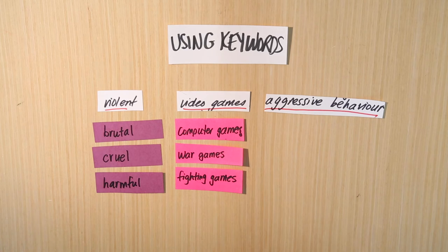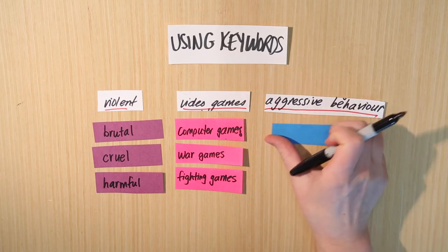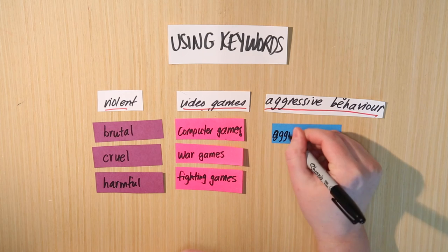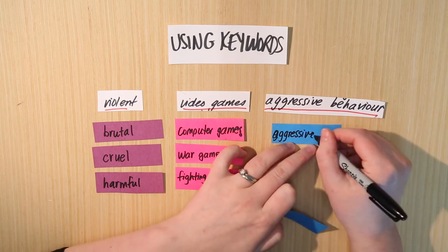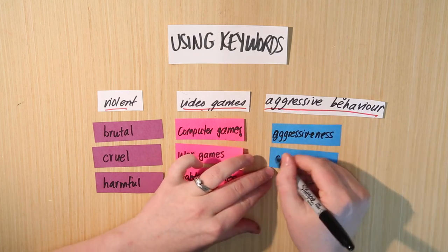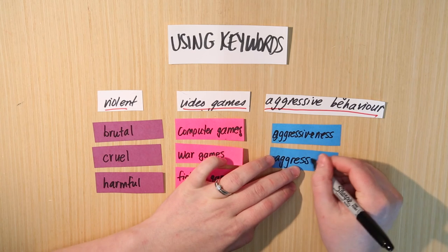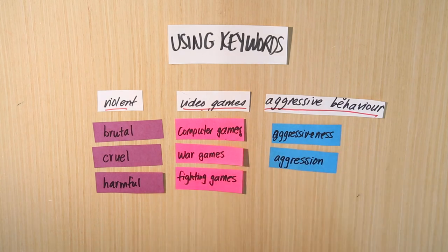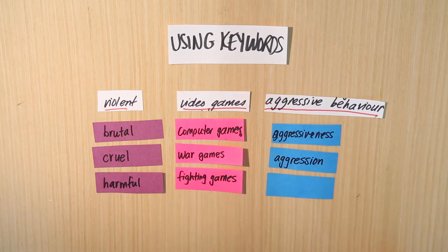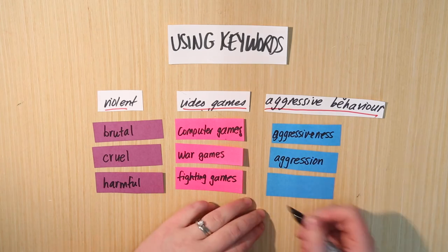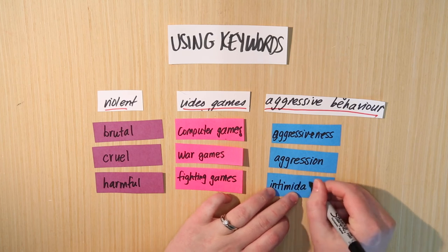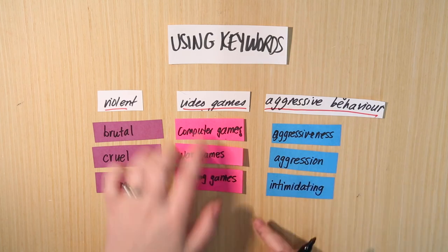Now let's do the same thing for 'aggressive behavior.' Maybe a person could have just used the word 'aggressiveness,' and if we don't search that, we're going to miss it. Or maybe they used the word 'aggression' — and if we don't search that, we would miss it too. What's another way to describe aggressive behavior? Sometimes aggressive behavior can be intimidating — that's a word a researcher might have used to describe the type of behavior someone has or doesn't have when playing violent video games.